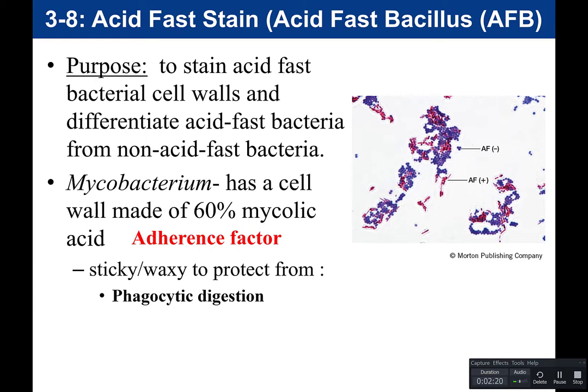An example is Mycobacterium tuberculosis, the bacteria that causes tuberculosis — TB. In patients who have TB, the bacteria gets into the lungs. Because the immune cells can engulf it but not digest it, the body forms scar tissue around the infection, leading to lung damage. This acid-fast positive cell wall, the mycolic acid, protects bacteria from phagocytic digestion. It also protects bacteria from dehydration — from drying out.